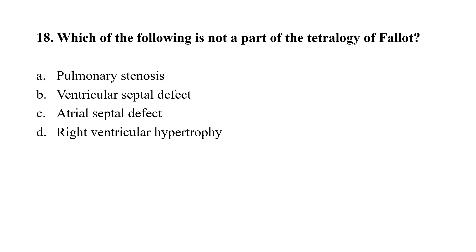Question number 18: Which of the following is not a part of tetralogy of Fallot? Option A: pulmonary stenosis; option B: ventricular septal defect; option C: atrial septal defect; option D: right ventricular hypertrophy. The correct option is C — atrial septal defect is not a part of tetralogy of Fallot. In tetralogy of Fallot there are 4 abnormalities: pulmonary stenosis, VSD, right ventricular hypertrophy, and overriding of aorta.